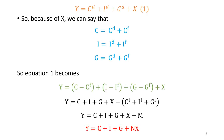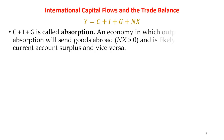In this equation, C plus I plus G — the total spending by domestic residents — is called absorption. An economy in which output exceeds absorption will send goods abroad, that is its net exports will be greater than zero, and this economy is likely to have a current account surplus. Whereas an economy that absorbs more than it produces will be a net importer — its net exports will be negative — and likely to have a current account deficit.